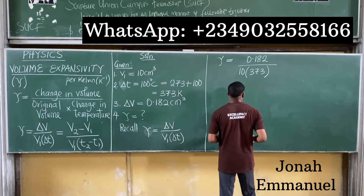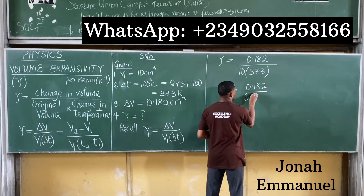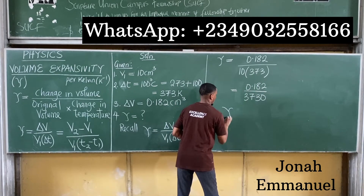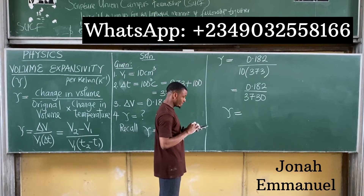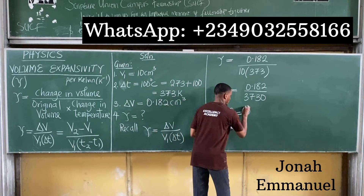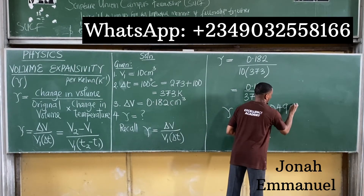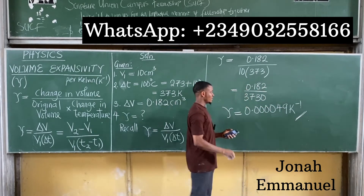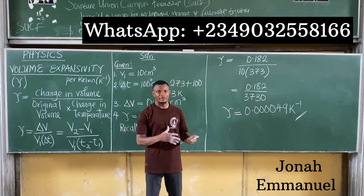Substituting the values: γ equals 0.182 divided by (10 × 373), which gives 0.182 divided by 3730. Using a calculator, that is approximately 4.88 × 10⁻⁵ per Kelvin. This is the volume expansivity of mercury.